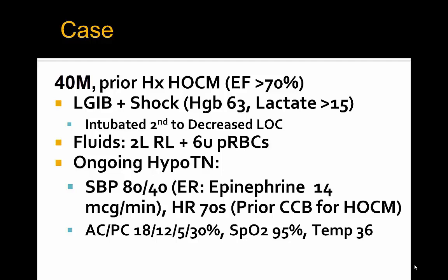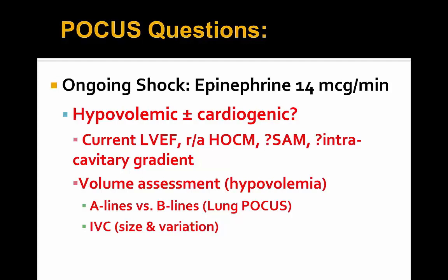The patient had ongoing hypotension secondary to shock with a systolic pressure of 80 over 40. In the emergency department, a central line was started and epinephrine at 14 micrograms per minute was started as a vasopressor. The clinical questions were: was the patient still hypovolemic, what volume assessment was required, was there a cardiogenic component from the HOCM complicating matters, was there systolic anterior motion of the mitral valve, and was there an intracavitary gradient?